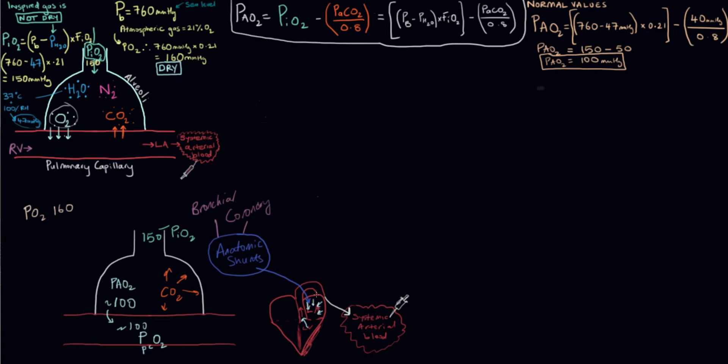The second source is any physiologic VQ mismatch. V is our ventilation coming into the lungs, and Q is the perfusion. These need to be well matched in order to have effective gas exchange.